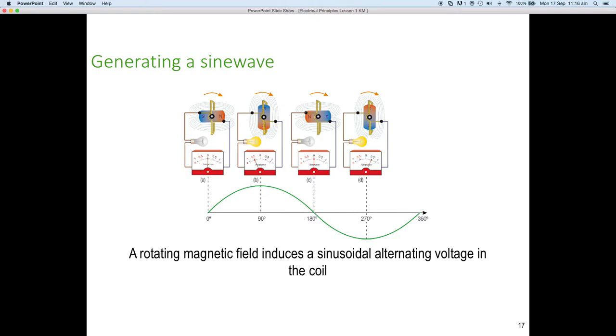Then, we rotate through another 90 degrees, and you'll see our magnetic fields are now cutting maximum amount of flux top and bottom of our coil, but in the opposite direction. So, the lamp is glowing positive, but the needle is pointing to the right. And you can see we've got minus half an amp flowing, and project that down, and we're at the maximum negative point at 270 degrees.